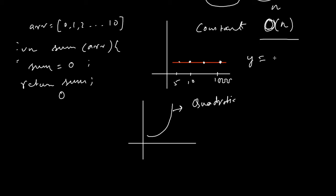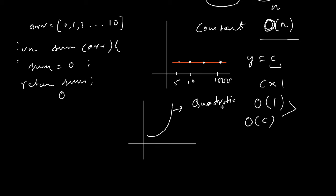Here is another example: y = c. Since there is only one term and it has nothing to do with the size of the input, we can consider c as c × 1. So in this case we have O(1) as the time complexity. Big O notation allows us to compare functions in terms of performance and time.